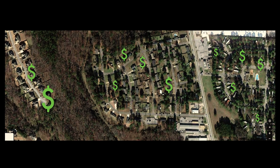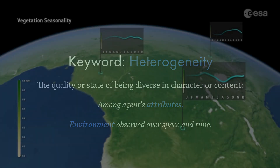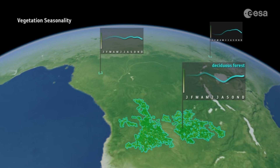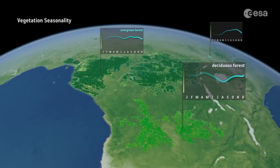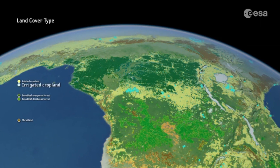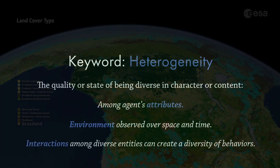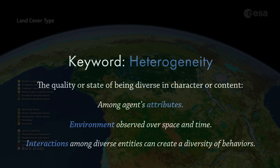Agents can be heterogeneous in the number, types, and intensity of the interactions with other agents or their environment. Environmental heterogeneity is observed over both space and time. For example, resource availability may vary seasonally with periods of higher or lower precipitation. Spatial heterogeneity is particularly pronounced in human-modified landscapes, which are best described as complex mosaics of natural land cover and human land uses. In socio-environmental systems, environmental heterogeneity is produced by, and influences, heterogeneity among agents. Generally, the more diverse the agents, their modes of interaction, and their environment, the greater the diversity of system-level behaviors that can emerge.